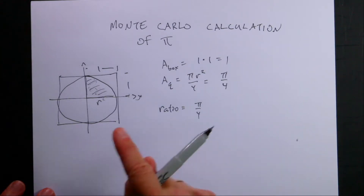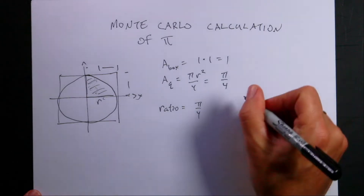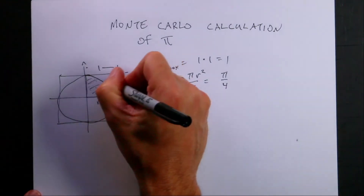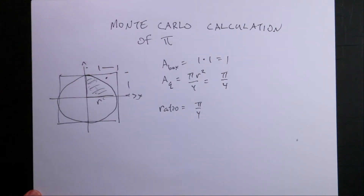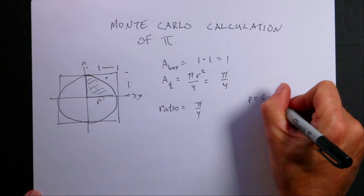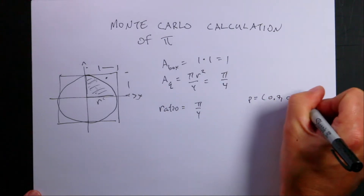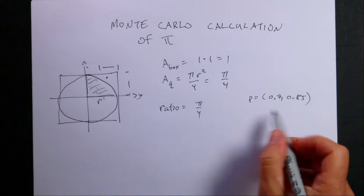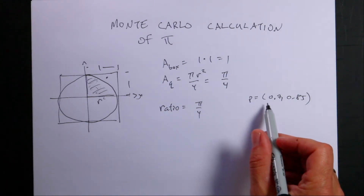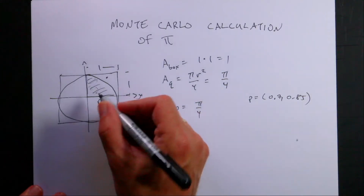And this is where our random number generation comes in. Imagine that I generate random numbers between 0 and 1, and I get a point with a random x and y — for example, 0.70, 0.85. Each of these numbers is between 0 and 1. So I can find out if that point is in the circle or not in the circle.